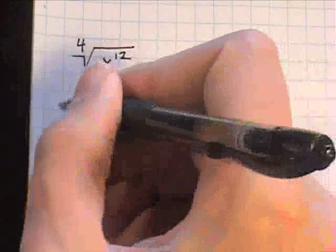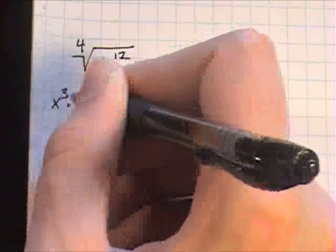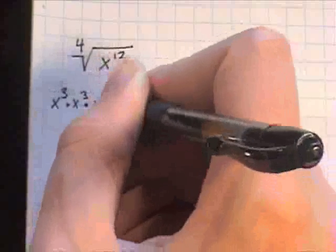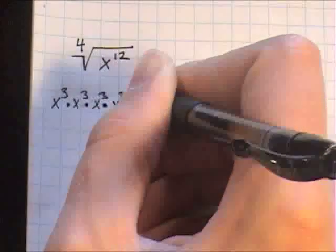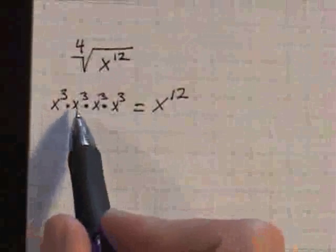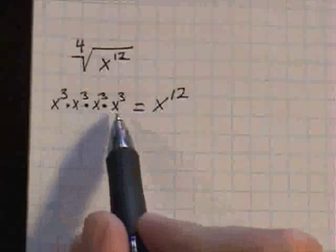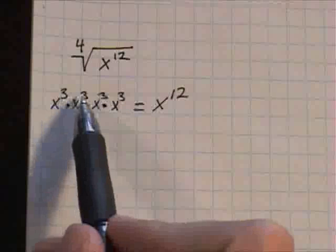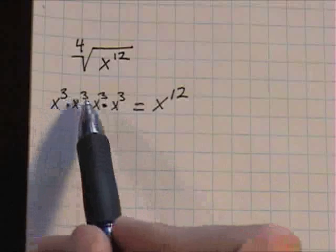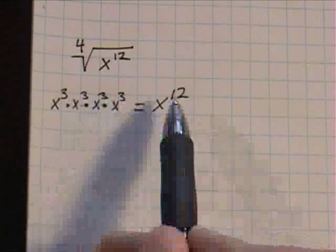Well, if you notice that if you have x to the third power and you kept multiplying it, as long as it had the same base, if you know your exponent rules, these numbers just add together. So three plus three plus three plus three would equal twelve.